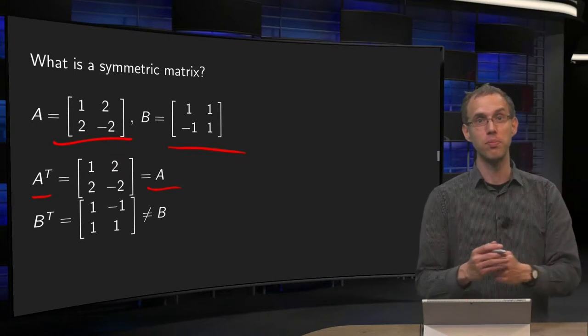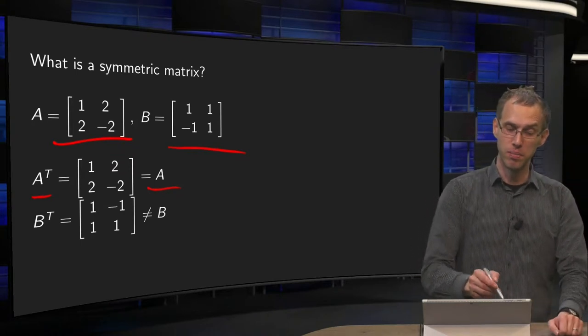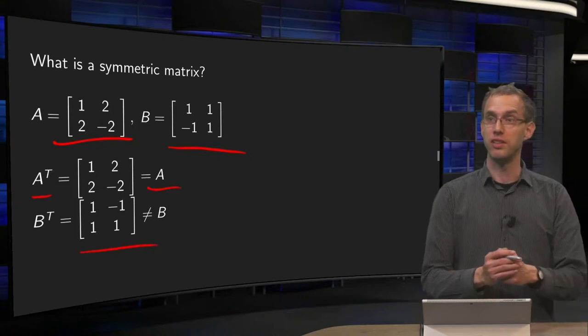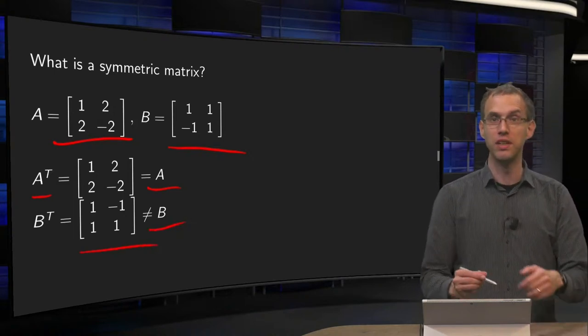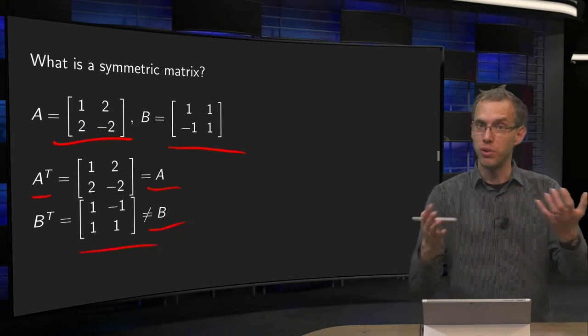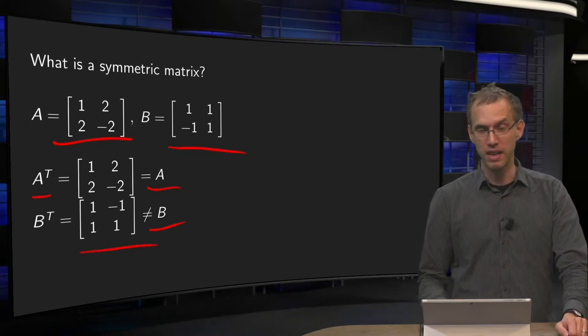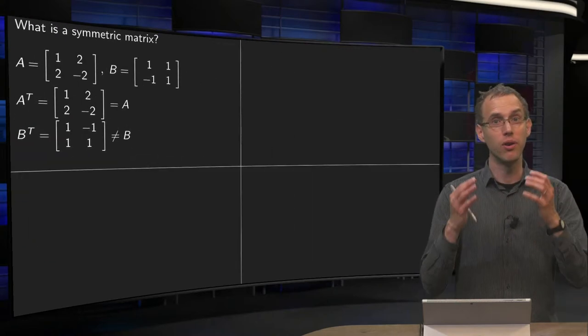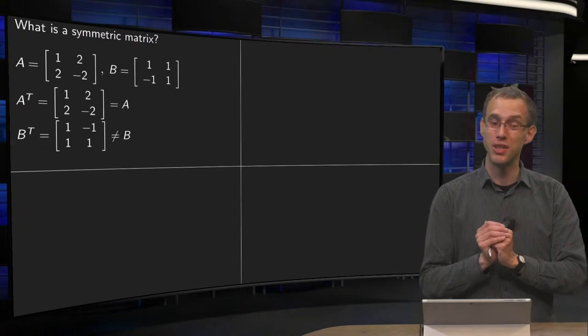so A transpose equals A, whereas if we take B transpose, we get another matrix which is not equal to B. So if you take a transpose, you will in general not get the same matrix back. If you get your original matrix back, then such a matrix is called symmetric.